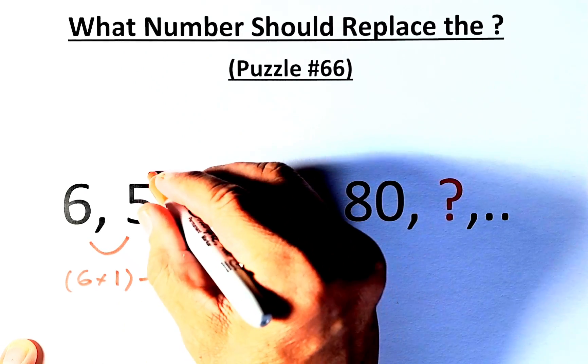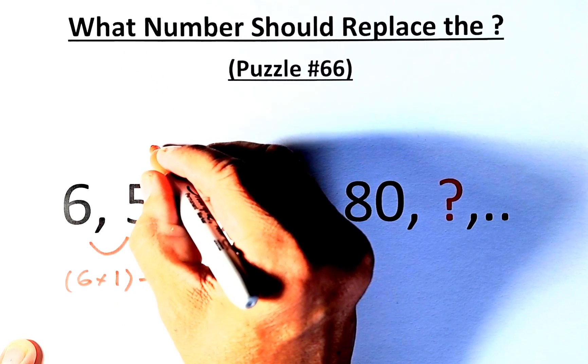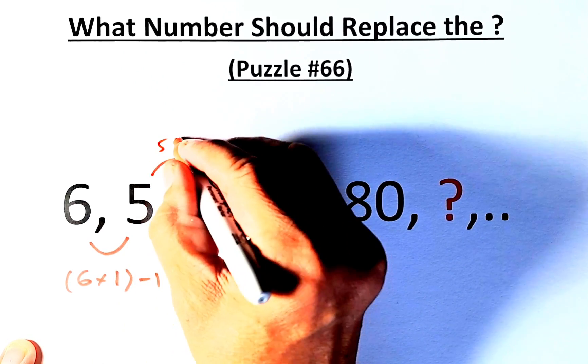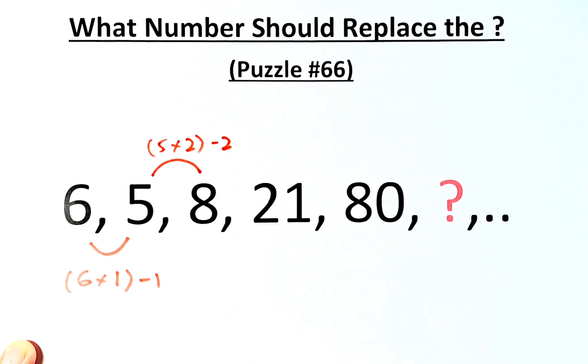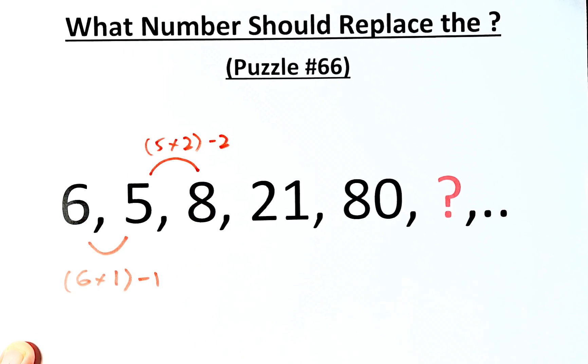To get 5 to 8, we do the same thing, but this time we're going to take the 5, multiply by 2, and then you minus 2. 5 times 2 is 10, 10 minus 2 will give us 8.